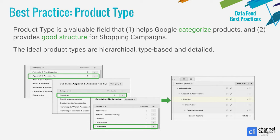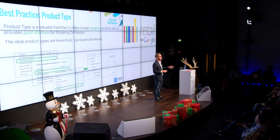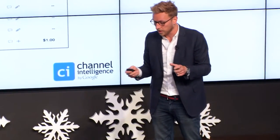On categorization: the product type attribute in your feed is one of two attributes that refer to categorization. It's really important — it helps Google categorize your products, and it's one of the attributes pulled through into AdWords, allowing you to structure your shopping campaigns a lot better. The Google product category is the other attribute, and you have to categorize products exactly to Google's taxonomy. With the product type, you can categorize your products however you like. I'd recommend making your product type categorization hierarchical, type-based and detailed, with the structure flowing nicely into how you'd like to set up your shopping campaigns. This will help with reporting, analysis, and free up custom labels for other performance-based metrics.